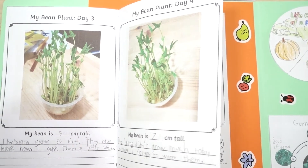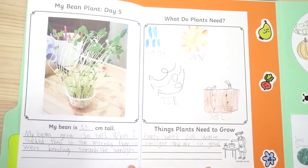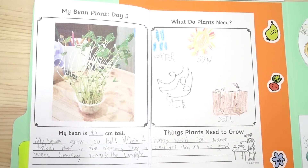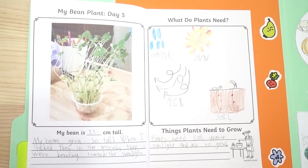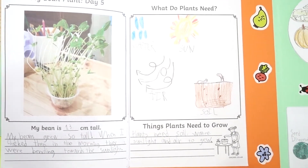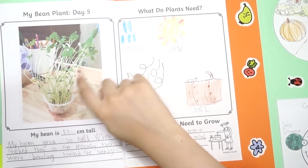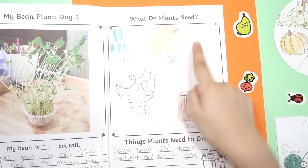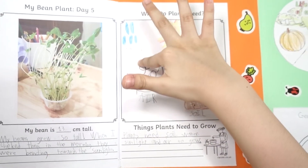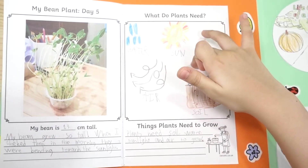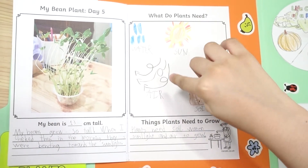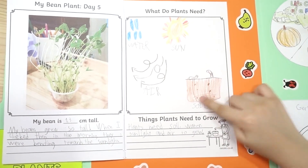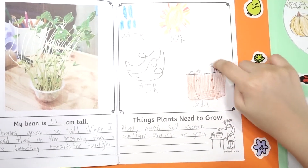Bean plant day 4, bean plant day 5. What do plants need? They need water, sun, and air — and there's soil, but there's worms.